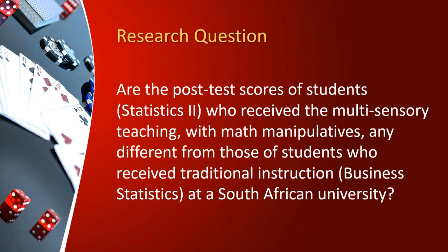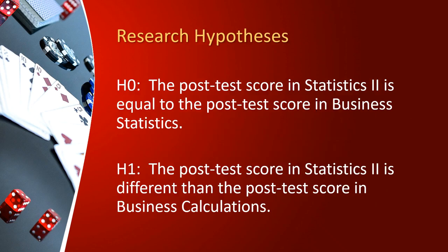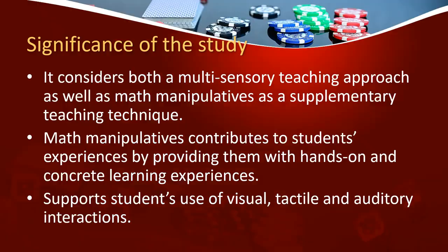The research question was: are the post-test scores of students in Statistics 2, who received multisensory teaching with math manipulatives, different from those of students who received traditional instruction in Business Statistics? The null hypothesis stated that the post-test scores in Statistics 2 are equal to the post-test scores in Business Statistics, while the alternative hypothesis stated that the post-test score in Statistics 2 is different from the post-test score in Business Statistics.